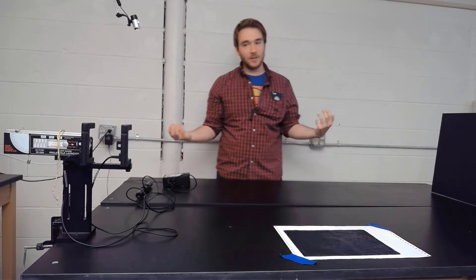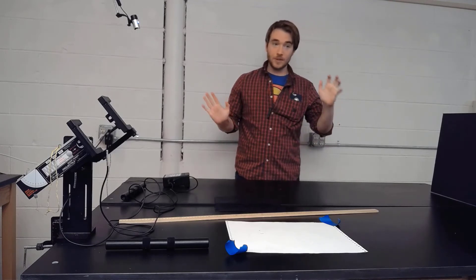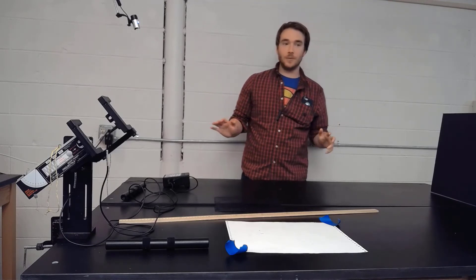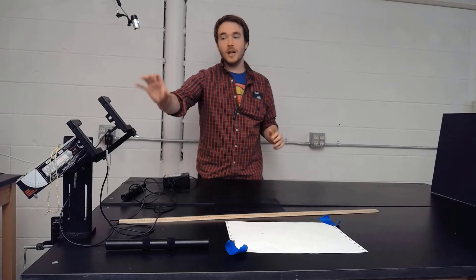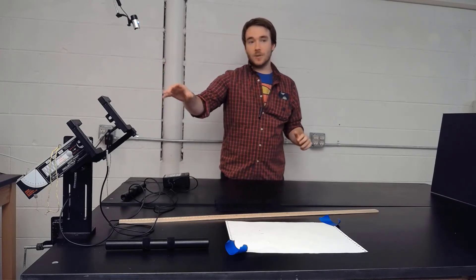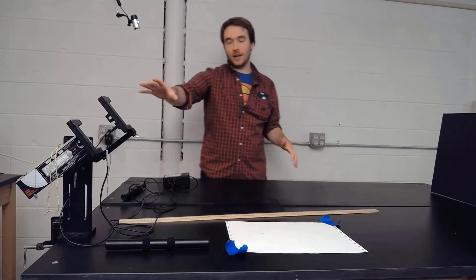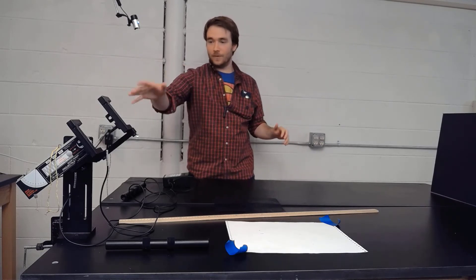So for part three of the experiment, it's going to be pretty much the same as we've been doing, but the difference is we're now going to have our projectile launcher set up at a new angle. So instead of our usual flat horizontal plane, we're now going to pick any angle between zero and 90 degrees to launch a projectile at.